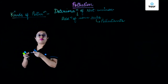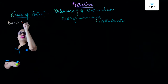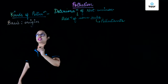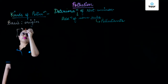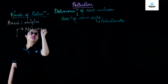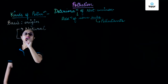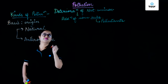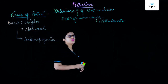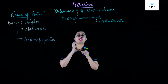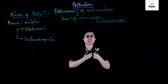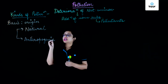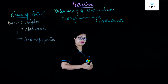The first kind of pollution is on the basis of origin. On the basis of origin, pollution can be of two types: natural pollution or anthropogenic pollution. Natural pollution means when pollution occurs because of some natural calamities like forest fires, volcano eruption, etc. And anthropogenic pollution means when pollution occurs because of some human activities.